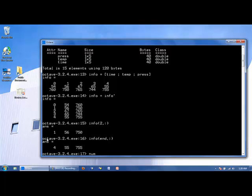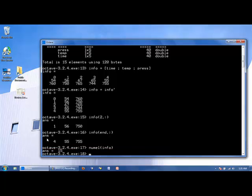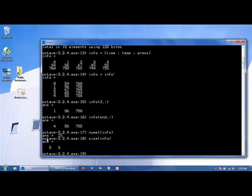The total number of elements in info should be 15, and indeed it is. If I say size of info, I get back two values: five rows, three columns.